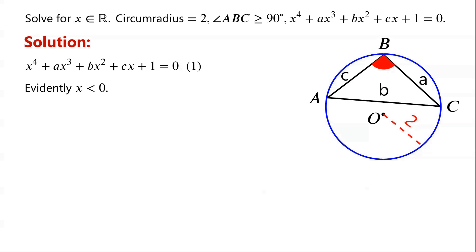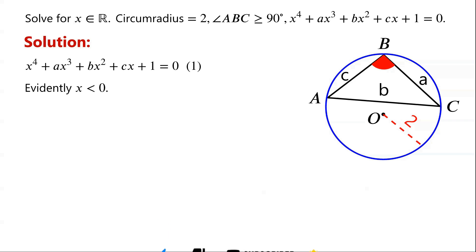Then how to solve this quartic equation? If the coefficients of a polynomial equation are integers, we could try and see whether the rational roots theorem can be applied. However, we just know that a, b, and c are the side lengths of triangle ABC — they are not necessarily integers. So we cannot use the rational root theorem.